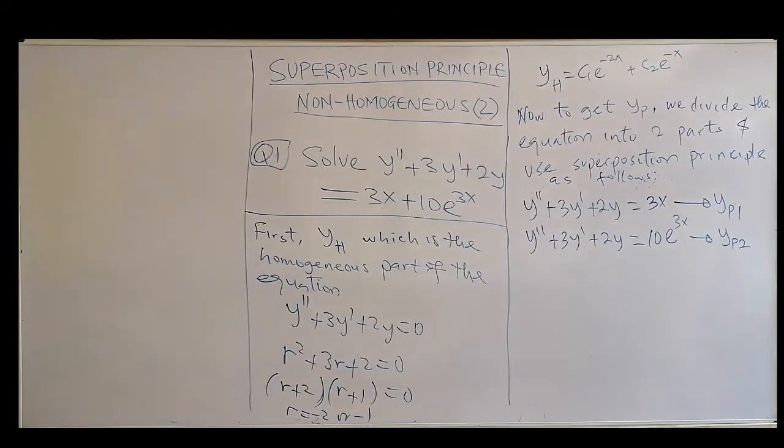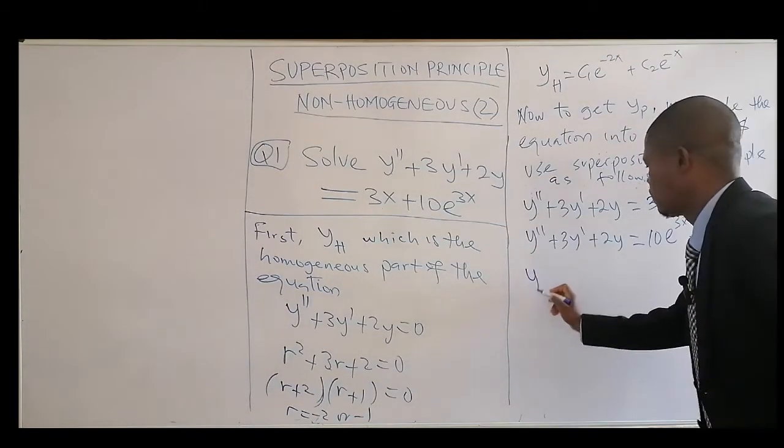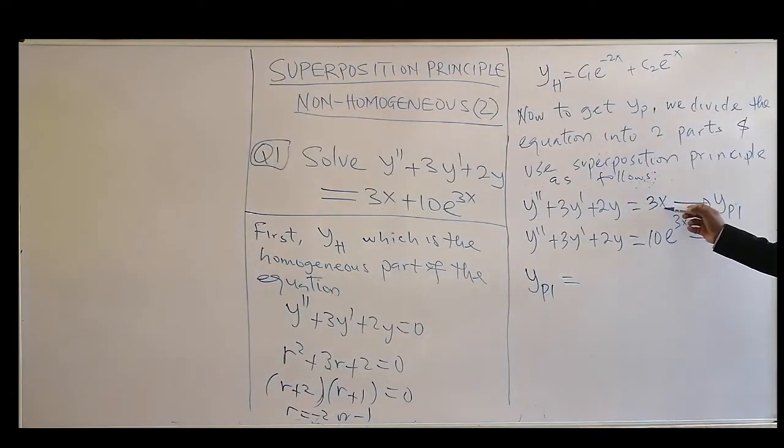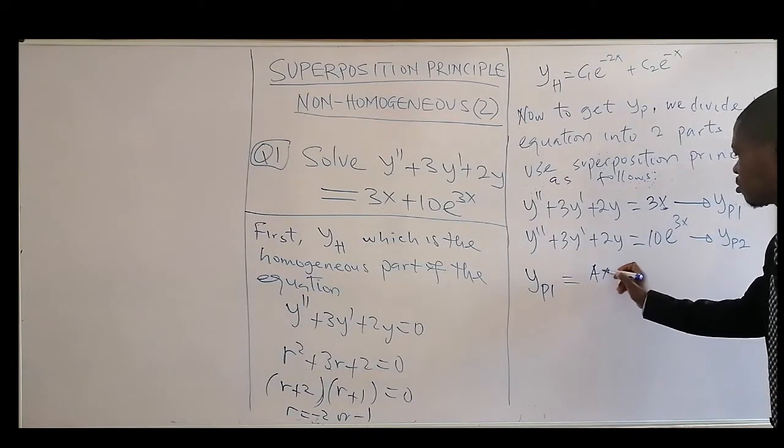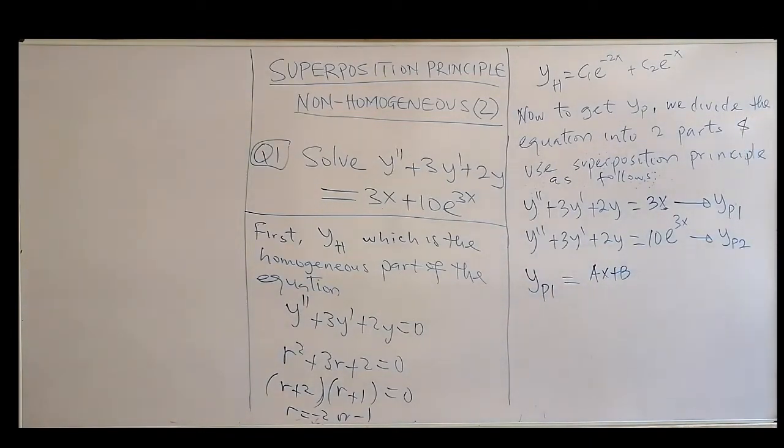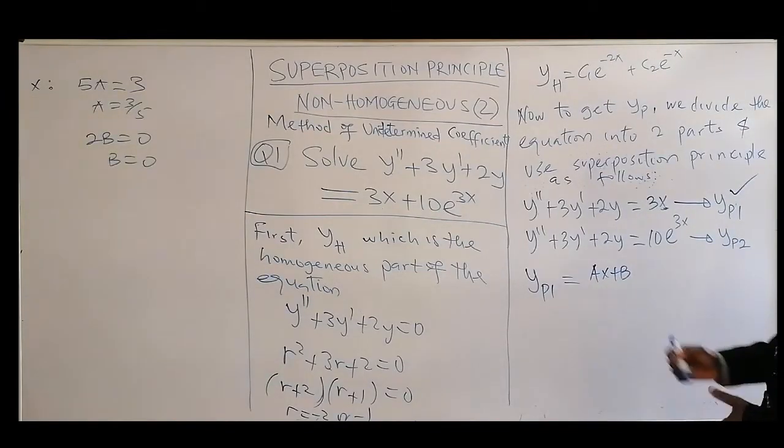For the second one, divide the equation into two parts again. Same thing also. That's the YP2. So let's get the YP1. YP1 will be equal to, this is a linear equation, and that will be equal to Ax + B. It's linear.